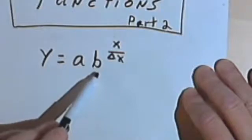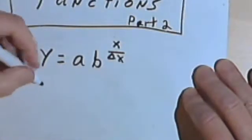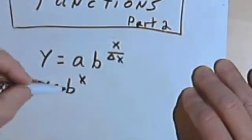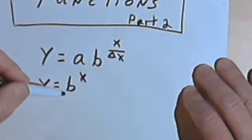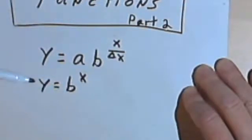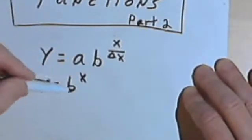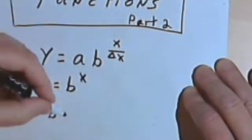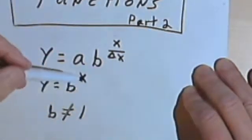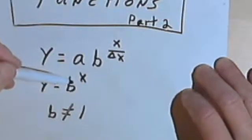Now I want to take a look at that b and see if there's any problems with that. So I'm just going to write y equals b to the x. And what I want to know is, are there any numbers that b should not be? Well, it wouldn't make any sense for b to be zero, because I wouldn't have much of an equation here. It also wouldn't make sense for b to equal 1, because if b was 1, any number to the first power is 1. So it also wouldn't be much of an equation.